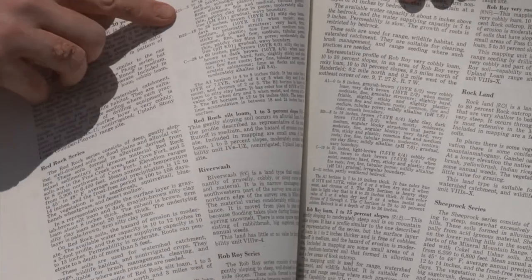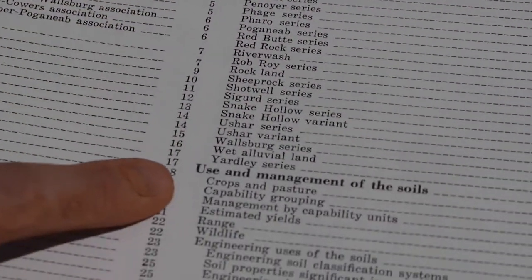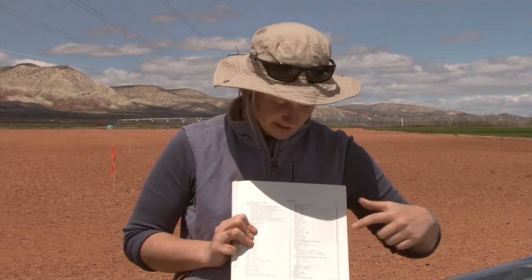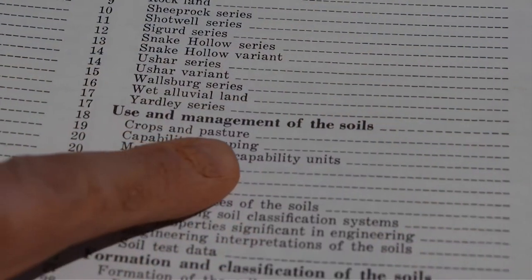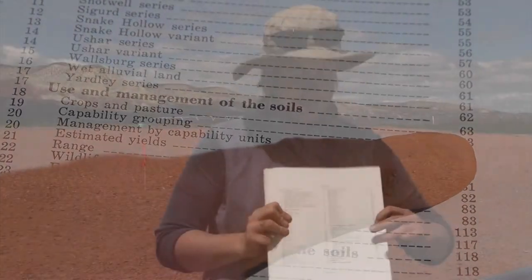This is going to give me some general description information for the red rock series. For additional information about the red rock soil series and particular land uses, I need to look in the use and management of the soils section of the soil survey. These sections have descriptions of different land uses and tables of information specific to that series. I'm particularly interested in crops and pasture management, so I'm going to look at the first section that starts on page 63.